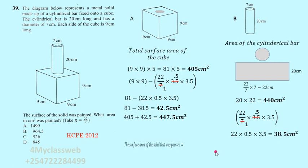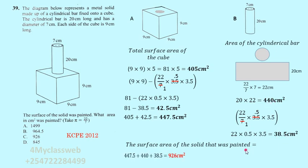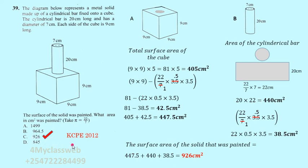To get the total surface area of the solid that will be painted, we add: 447.5 (cube) plus 440 (curved cylinder surface) plus 38.5 (top circle of cylinder) = 926 centimeters squared. That is the total painted surface area of this composite shape, and this answer was given as choice C: 926 centimeters squared.